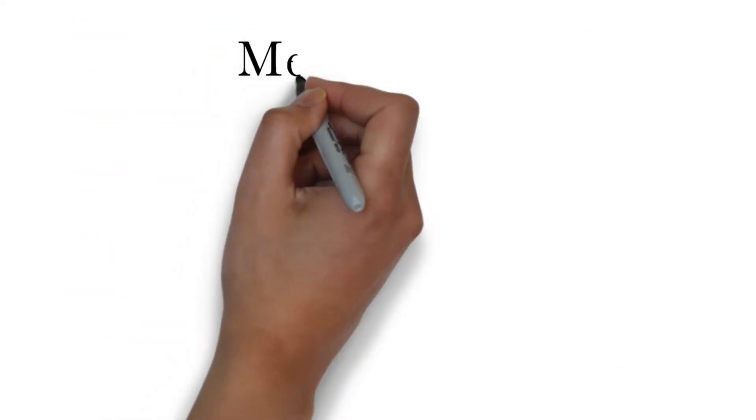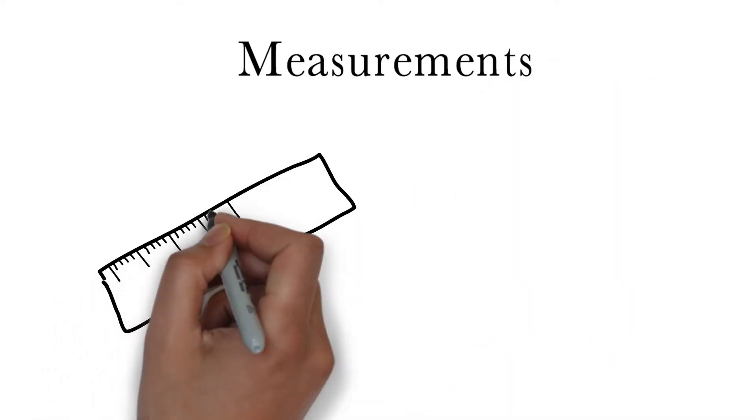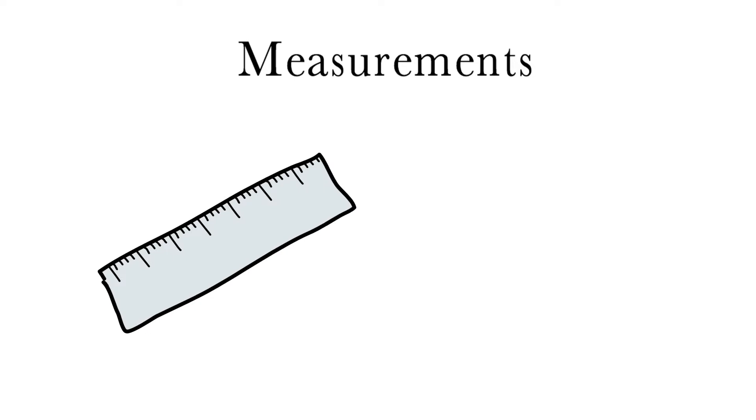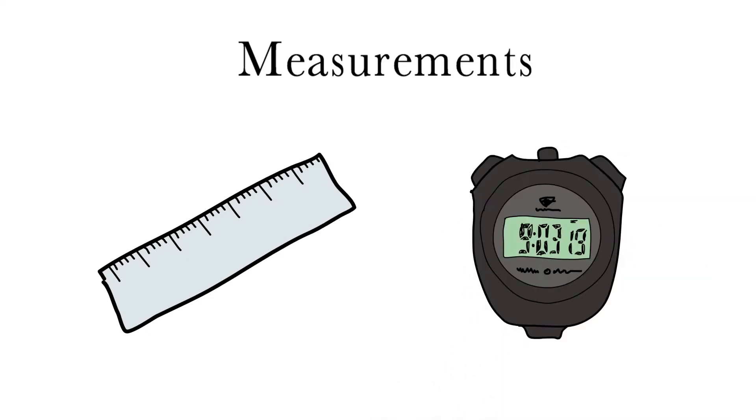Unlike exact values, measurements are quantities that are measured with some sort of a tool. For example, we measure lengths with rulers and measure time with a stopwatch. No measuring tool is perfect, so there will be some uncertainty with measured values.